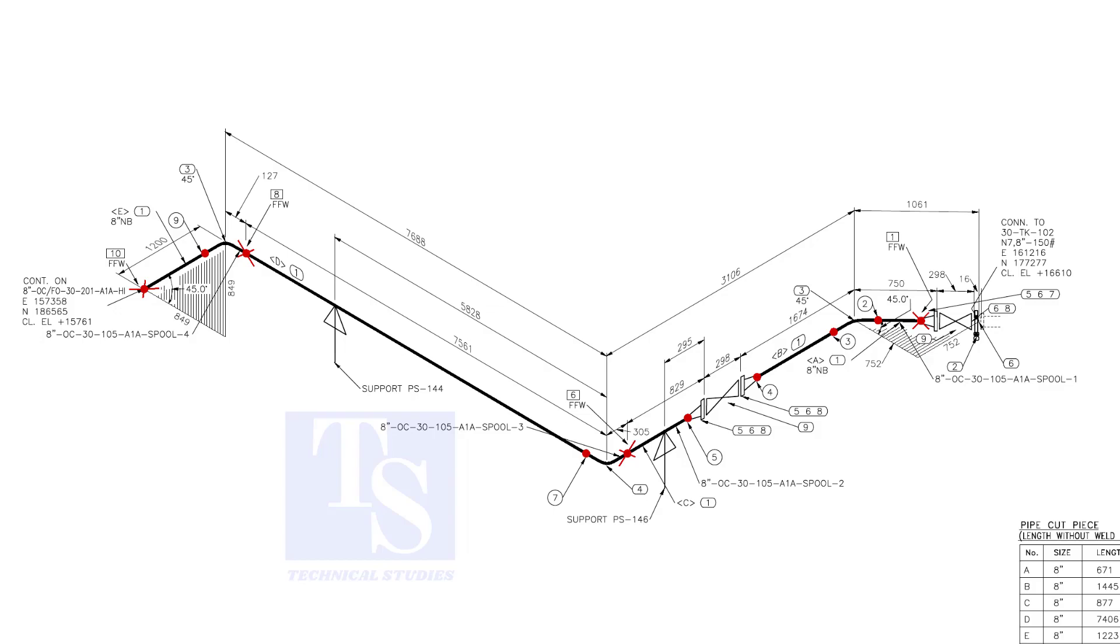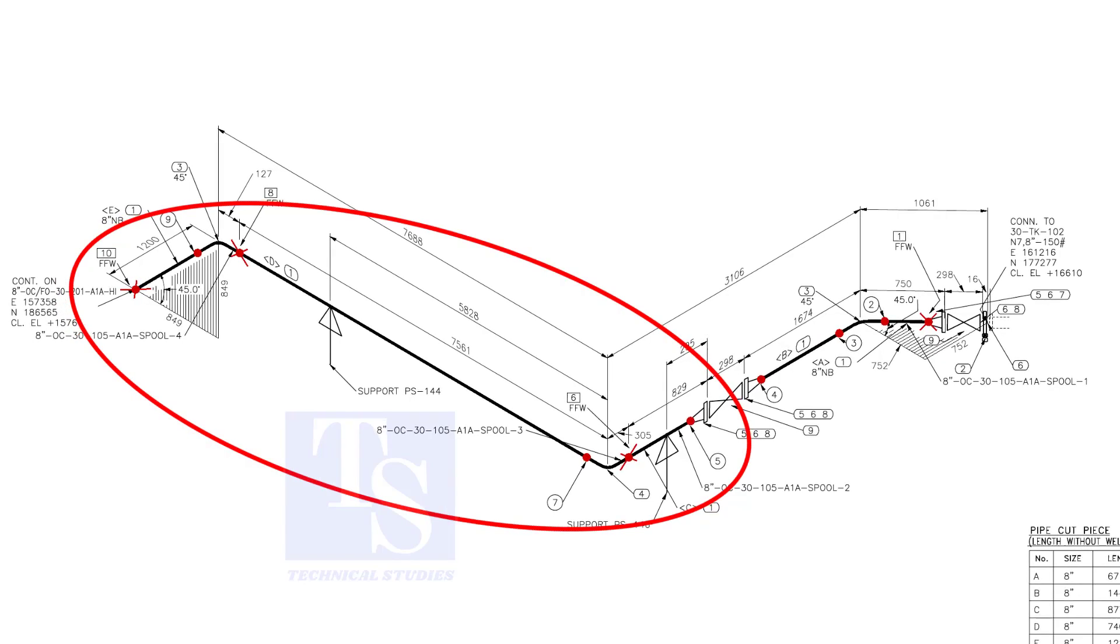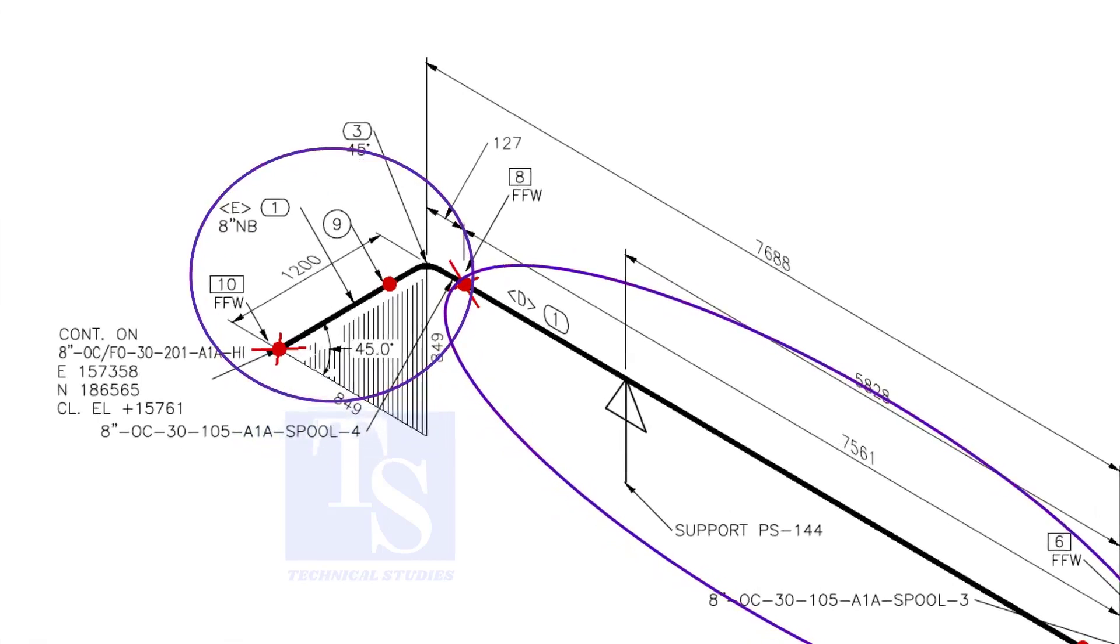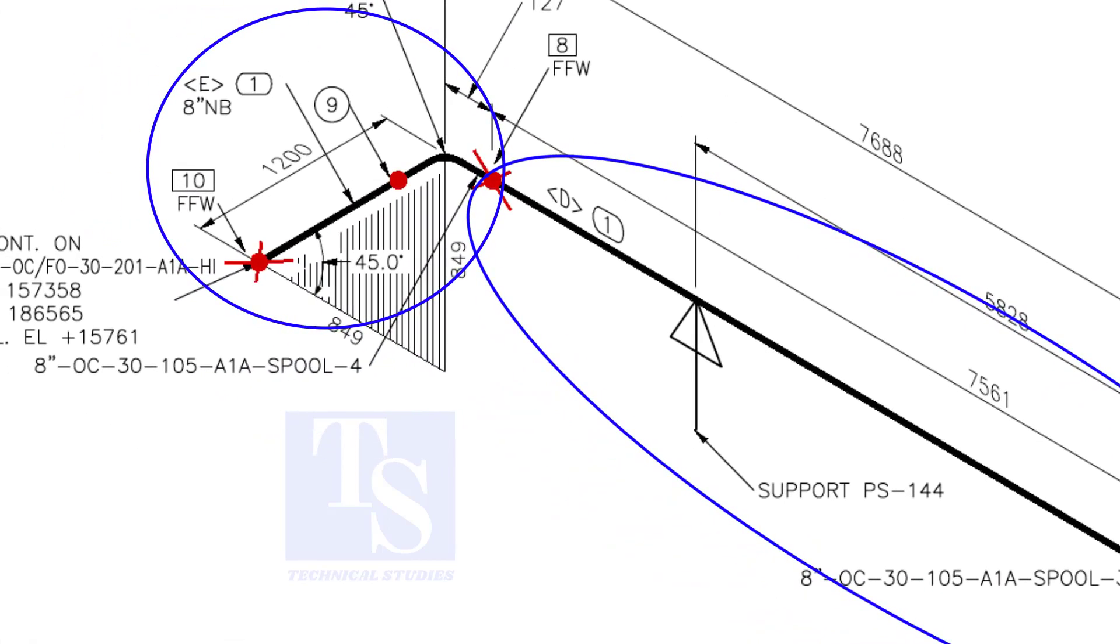We are going to fabricate this part of the piping. In this part of the drawing, there are three spools. This joint is FFW, which means Final Fit Weld. We will do the fit-up and welding at site.